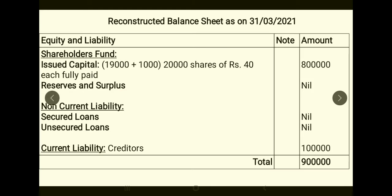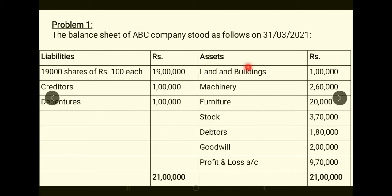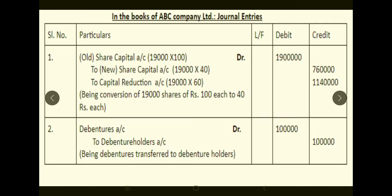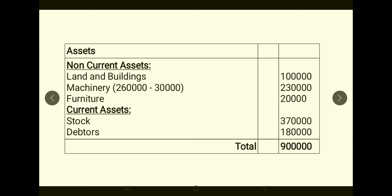On the asset side: Land and Buildings, Furniture, Stock, and Debtors are carried forward as-is from the old balance sheet. Machinery is reduced by Rs.30,000, so it is shown at Rs.2,30,000. Goodwill and P&L Account are completely written off and do not appear in the new balance sheet. The reconstructed balance sheet tallies at Rs.9,00,000, and Problem 1 is complete.